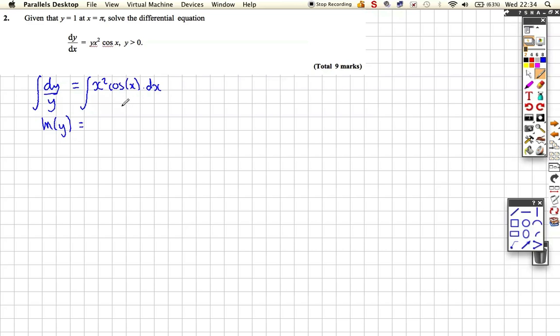So this is going to be an integration by parts. Now you need to know the formula for integration by parts, and that looks like this. The integral of u dv/dx dx is equal to uv minus the integral of v du/dx dx.